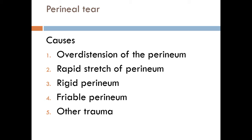Over-distention of the perineum can also occur in face-to-pubis delivery, instrumental delivery, narrow vagina, and narrow subpubic arch. Rapid stretch of the perineum can occur during precipitate labor and delivery of the after-coming head in breech. Rigid perineum is common in older primigravidas, and friability and edema of the perineum can all lead to perineal tear during vaginal delivery.